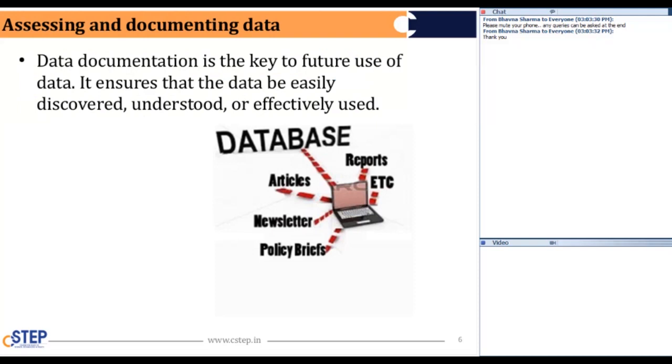Assessing and documenting data. Data documentation is the key to future use of data. It ensures the data is easily discovered, understood or effectively used. For example, we keep a track of all the publications or all the written material that is from the C-STEP. So, you have to document them properly for the end users so that they can easily access your documentation and navigate the data properly without losing into the folders and files or asking or searching here and there. So, you have to have your documentation properly with the proper name to have the end users good.